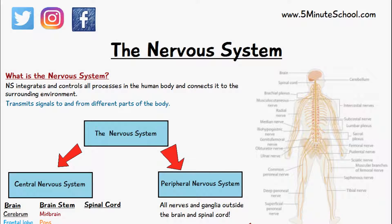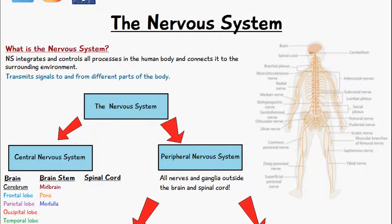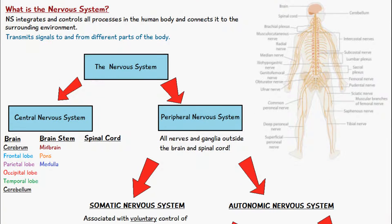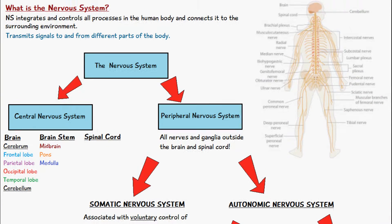The nervous system is a very complex system and its function in the body is to control all of the processes that are going on. Not only does it control all of the processes that occur within the human body, but it also relates to the surrounding environment as well. So we can divide the nervous system into the central nervous system and the peripheral nervous system.